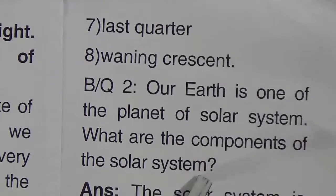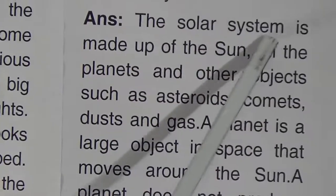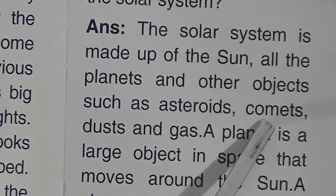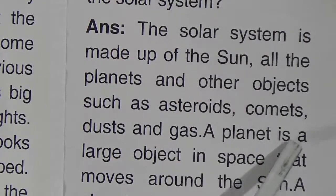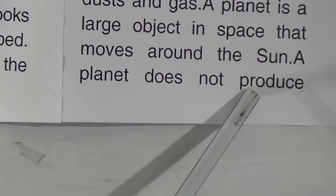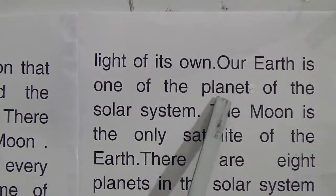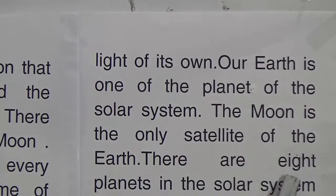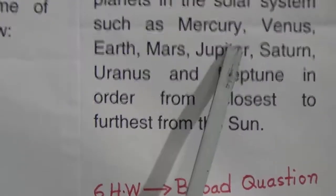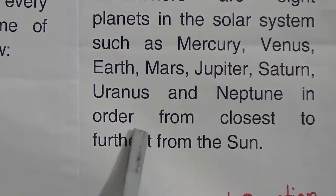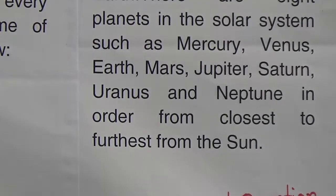The answer for broad question 2: the solar system is made up of the sun, all the planets, and other objects such as asteroids, comets, dust, and gas. A planet is a large object in space that moves around the sun. A planet does not produce light of its own. Our Earth is one of the planets of the solar system. The moon is the only satellite of the Earth. There are 8 planets in the solar system: Mercury, Venus, Earth, Mars, Jupiter, Saturn, Uranus, and Neptune, in order from closest to furthest from the sun.